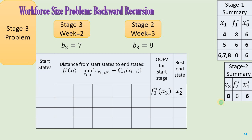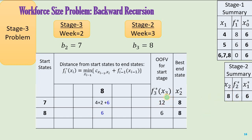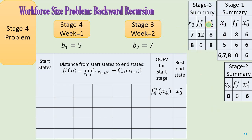For the stage three problem, which starts from stage three and ends in stage two, the start states are 7 or 8 and the end state is 8 only. Going from 7 to 8 means hiring one employee, which incurs a hiring cost, plus the previous cost of 6 units for that state. Going from 8 to 8 has no current-stage cost, but carries a previous cost of 6 units, giving an optimal cost of 6 units for that row. Here is the summary of the stage three problem.